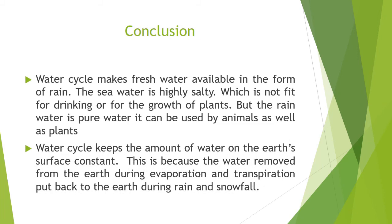The water cycle makes fresh water available in the form of rain. Sea water is highly salty and not fit for drinking or for the growth of plants, but rain water is pure water that can be used by animals as well as plants. The water cycle keeps the amount of water on the earth's surface constant, because the water removed during evaporation and transpiration is put back to the earth during rain and snowfall.